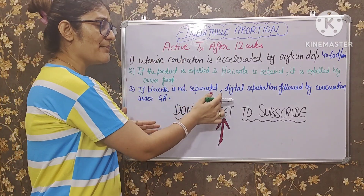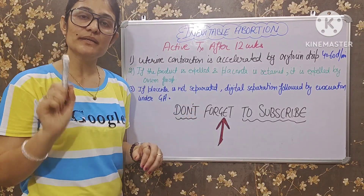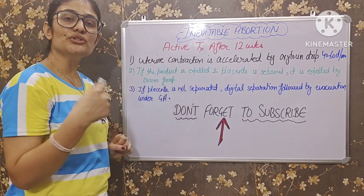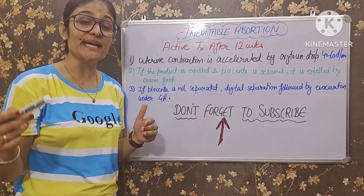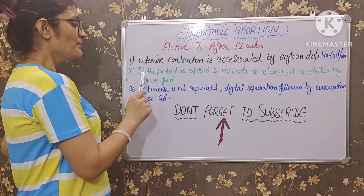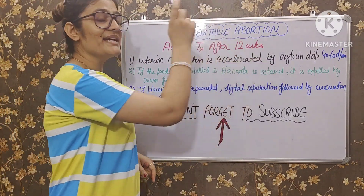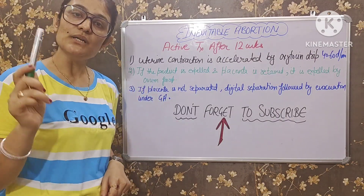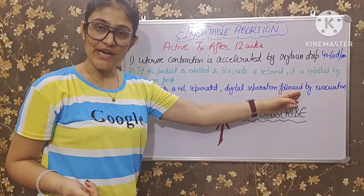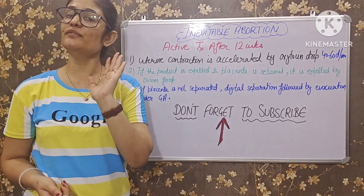Agar placenta separate nahin hua hai, to aisi condition mein digital separation kara jata hai placenta ka, under general anesthesia — aur phir evacuation kara jata hai. So after 12 weeks active management mein 3 cheezein hain: one, uterine contractions accelerate karenge via oxytocin drip at 40 to 60 drops per minute; two, product expelled but placenta retained — ovum forceps se bahar nikalenge; three, placenta separate nahin hua — digitally separate karke evacuation under general anesthesia.